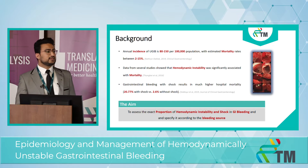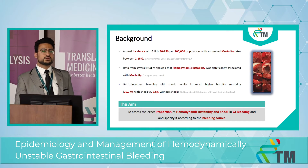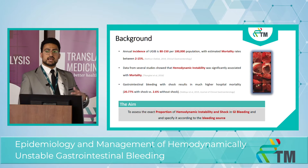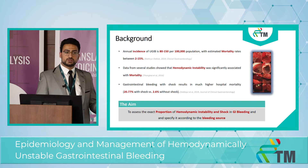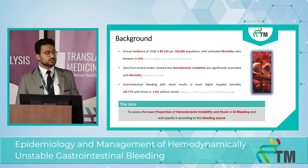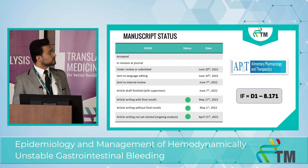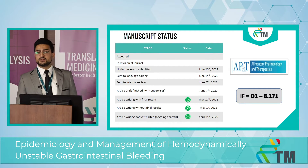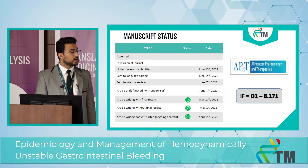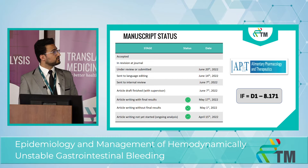Patients who develop shock are at around 10 times higher risk of mortality. The aim is to assess the exact proportion of those patients and specify it according to the bleeding source. Currently I am writing the articles with the final results, and our targeted journal is APT.